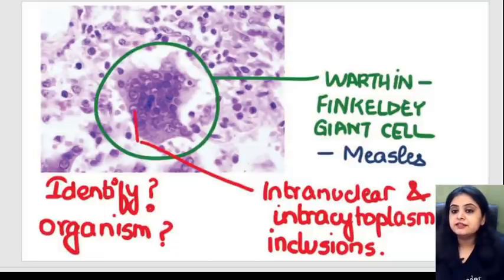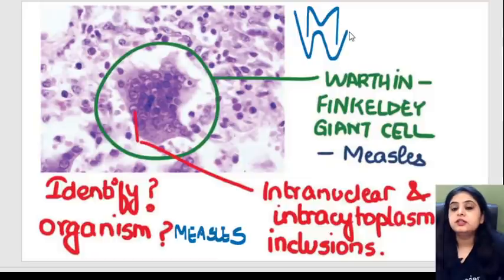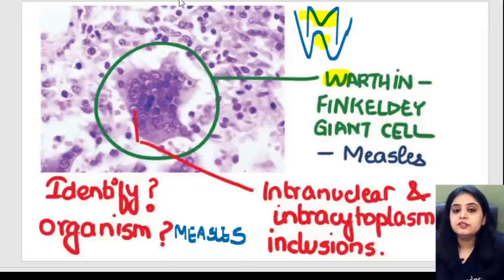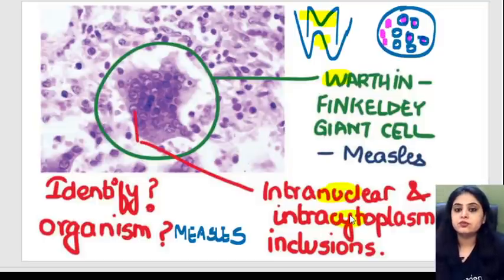Measles also shows both intranuclear and intracytoplasmic inclusions. The image shows a giant cell — in measles we see the Warthin-Finkeldey giant cells, which also came as a names question in previous years. This huge giant cell has lots of nuclei. Inside every nucleus you'll see a pink-colored dot — intranuclear inclusion. In the cytoplasm also, you see pink-colored dots — intracytoplasmic inclusions.